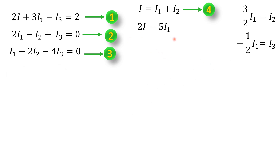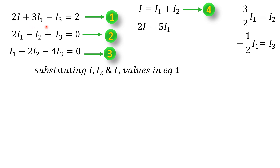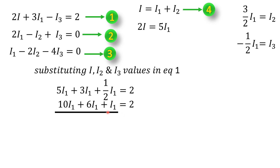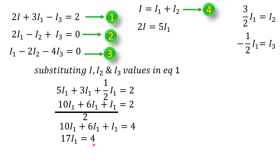Now we have 2I, I2, and I3 all in terms of I1. Substituting into Equation 1: 5I1 plus 3I1 plus 1/2 I1 equals 2. Taking LCM: (10I1 plus 6I1 plus I1) / 2 equals 2, so 17I1 equals 4. Therefore, I1 equals 4/17.